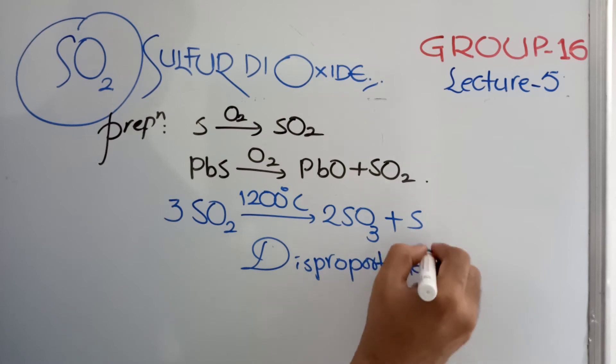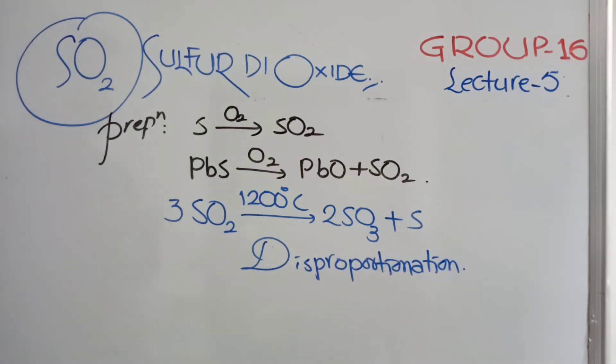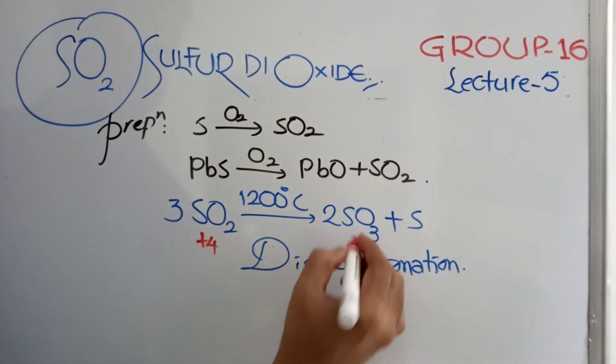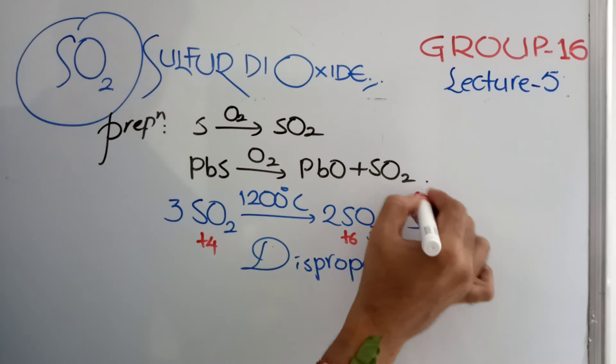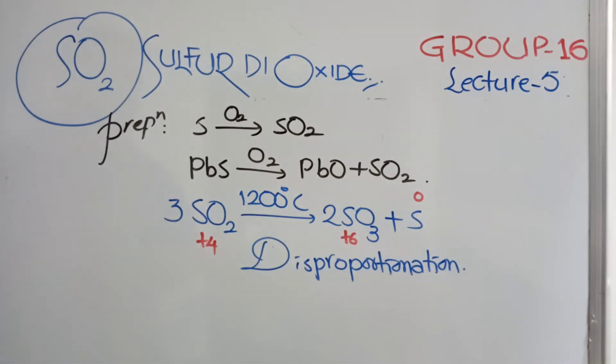What is disproportionation? One element only undergoing both oxidation as well as reduction type. Here Sulfur Dioxide oxidation state is plus 4. Here Sulfur Trioxide is plus 6. Sulfur is 0. Once it is undergoing oxidation, another time it is undergoing reduction. So you can say this is a disproportionation when Sulfur Dioxide is heated to 1200 degrees Celsius.